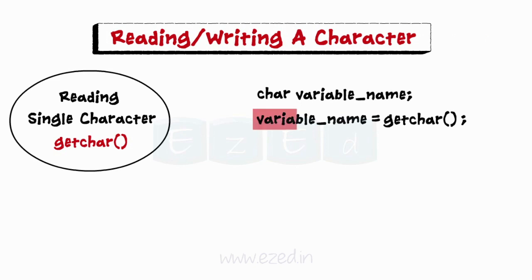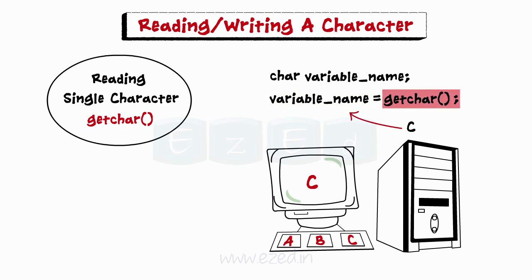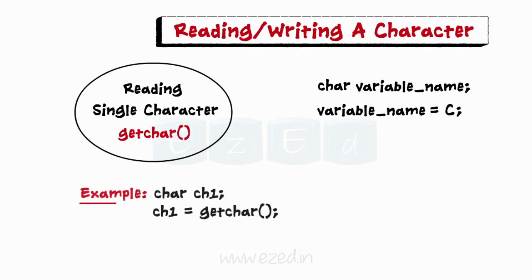When this statement is encountered, the computer waits until a valid key is pressed and assigns this character as a value to the getChar function. Since getChar is used on the right-hand side of the assignment statement, the character value is in turn assigned to the variable name on the left. Look at this example: here ch1 is declared of type character, and getChar is used to input the character stored in ch1.